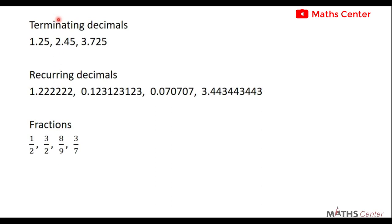Rational numbers also include terminating decimals, where the decimals end at a point — for example, 1.25, 2.45, 3.725. They also include recurring decimals, which are infinite. For example, 1.222... where the 2 continues up to infinity.